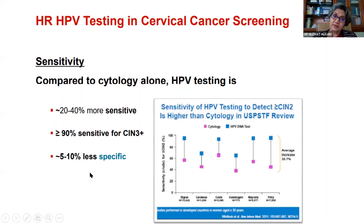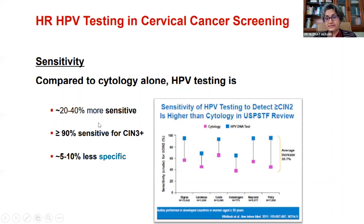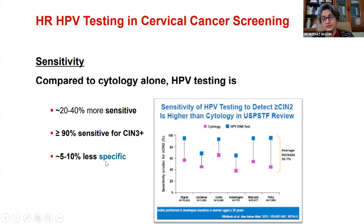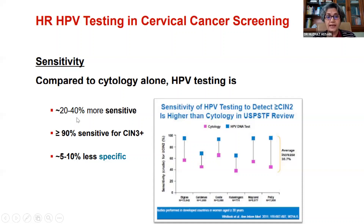Why has HPV testing gone above and beyond cytology? Because we are looking for a more sensitive test. When looking at a population survey, we need a test which is more sensitive rather than more specific. So though the specificity of cytology is higher, the sensitivity of HPV testing is about 20 to 40% more than that of cytology, and hence it is the first choice for screening.